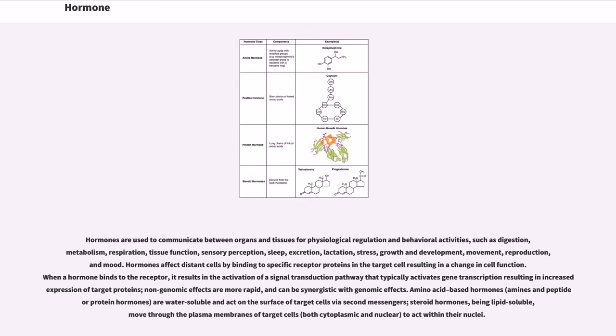Hormones affect distant cells by binding to specific receptor proteins in the target cell resulting in a change in cell function. When a hormone binds to the receptor, it results in the activation of a signal transduction pathway that typically activates gene transcription resulting in increased expression of target proteins. Non-genomic effects are more rapid and can be synergistic with genomic effects.